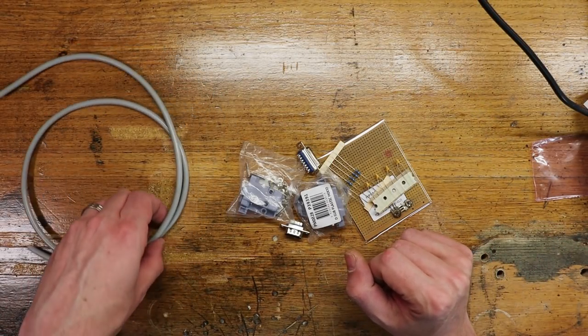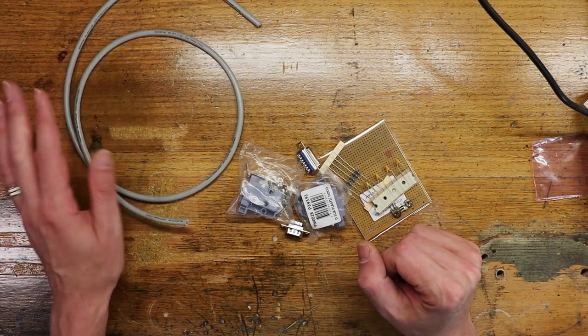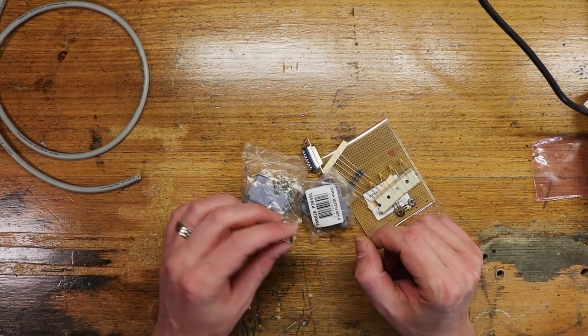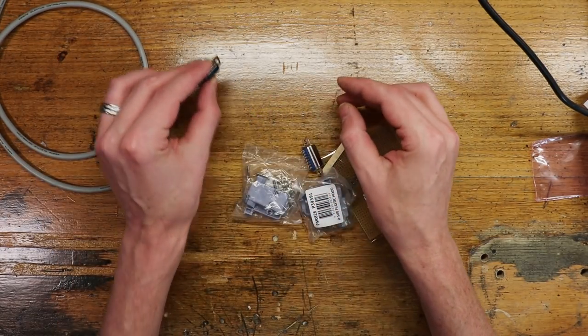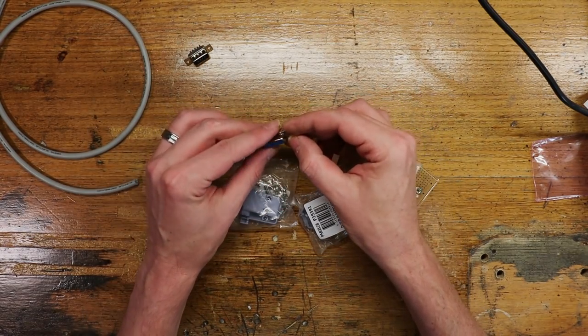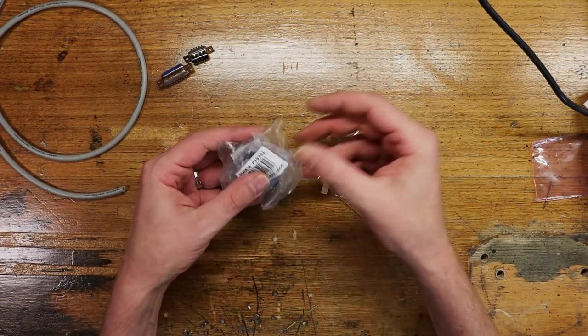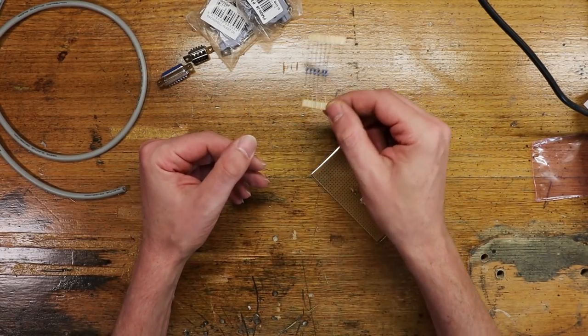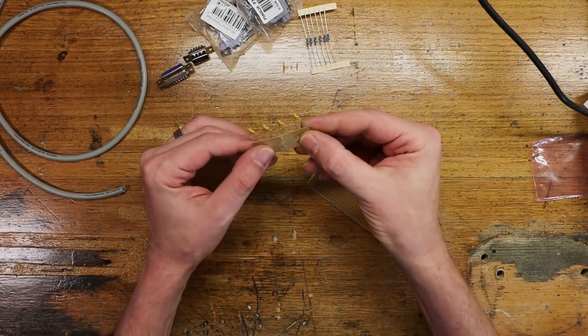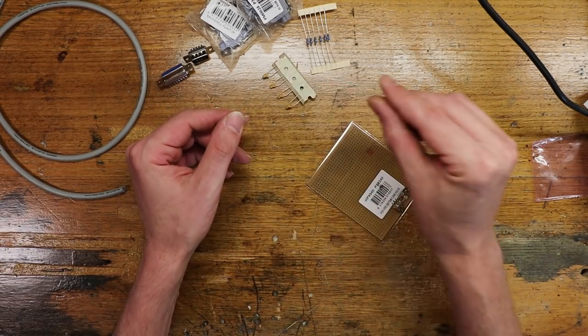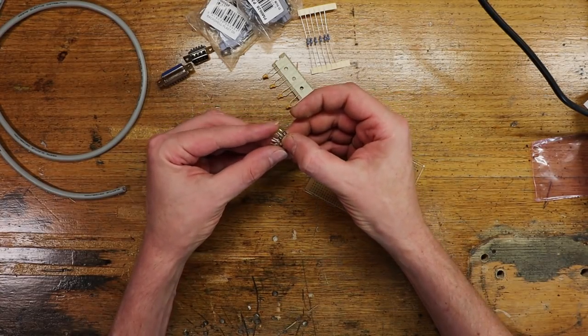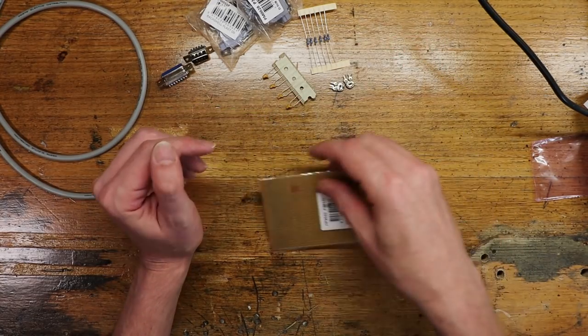So these are all the parts you're going to need. You are going to want some multi-core cable, this is 9 core although we don't use all the cores in it. You're going to want a male DB9 connector, a female DB15 connector, cases for both of them, a couple of 680 ohm resistors, some 104 caps, a couple of 500k pots and a bit of perfboard.